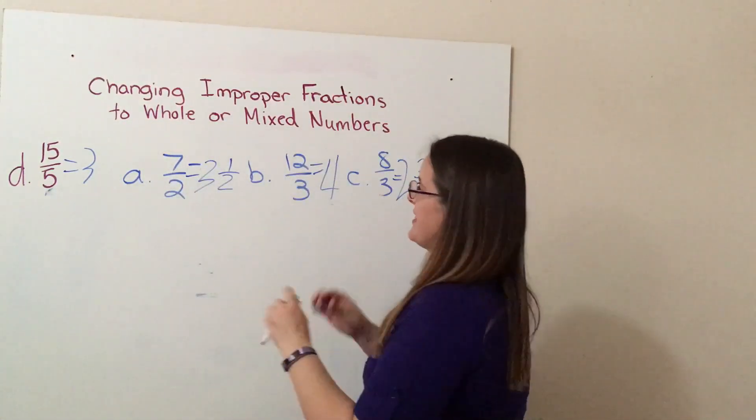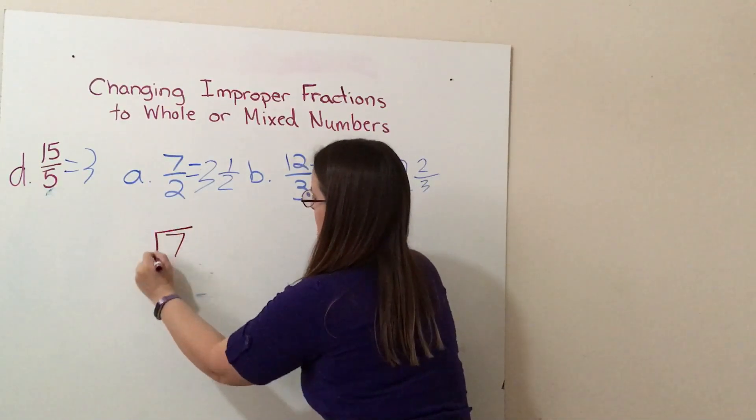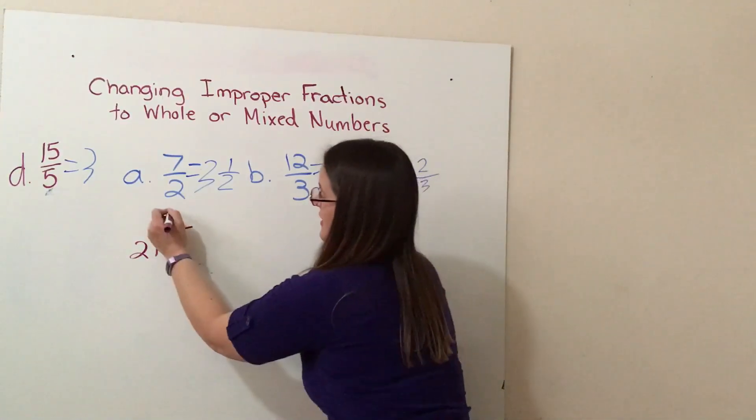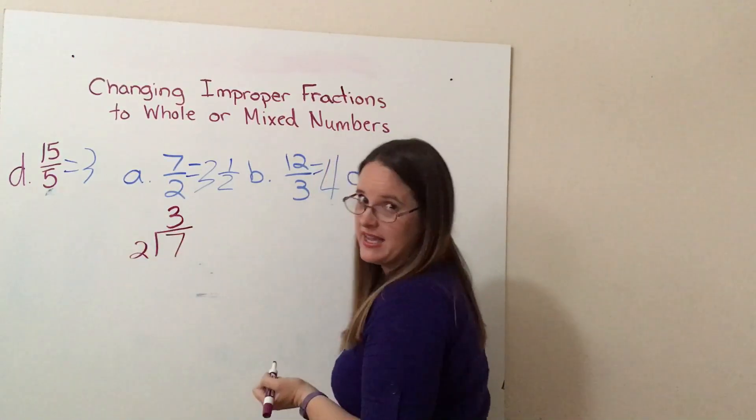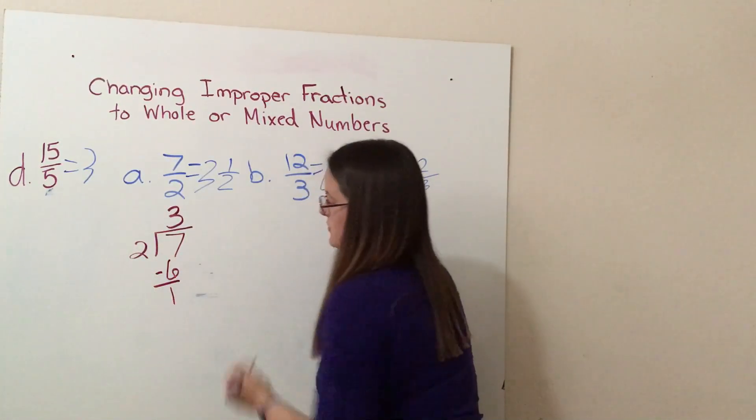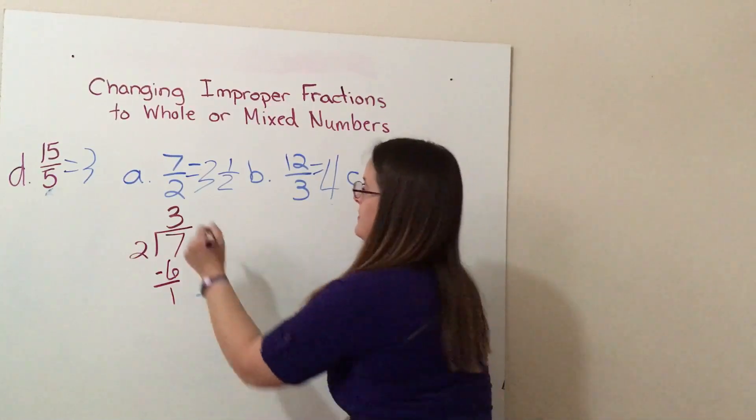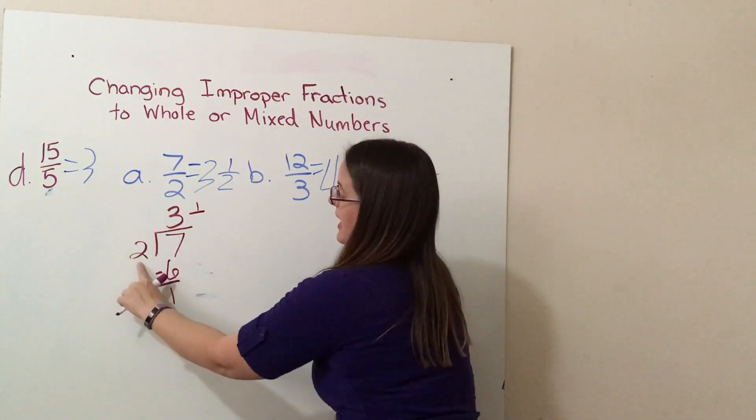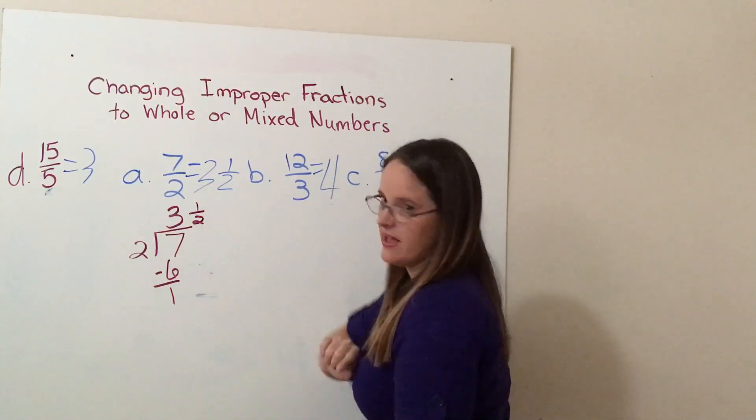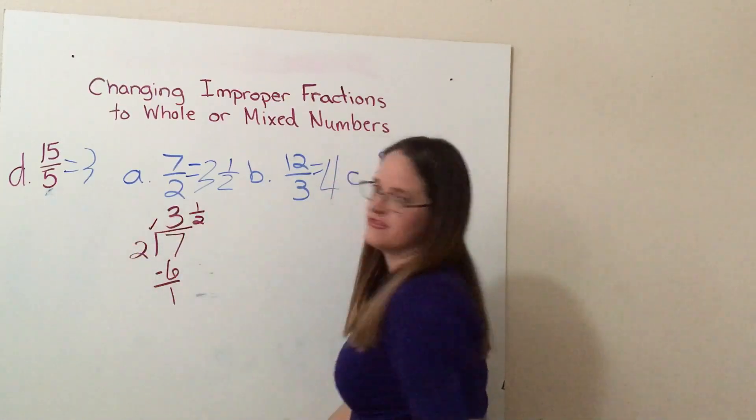So we'll start with A here. We should have seven divided by two. How many times does two go into seven? Three. Three times two is six. When we subtract, we get a remainder of one, but now we turn this remainder into our numerator and our divisor again becomes the denominator. So I got three and a half, Nyla got three and a half, we've checked our work.